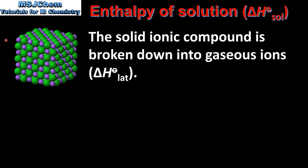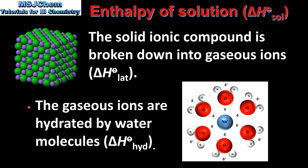The dissolving of an ionic compound can be divided into two steps. In the first step, the solid ionic compound is broken down into gaseous ions — this is known as the lattice enthalpy. In the second step, the gaseous ions are hydrated by water molecules; this is known as the enthalpy of hydration. We'll look at hydration in more detail later in the video.